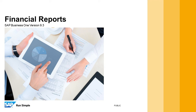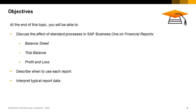Welcome to the Financial Reports topic. We will explore the effect of standard processes in SAP Business One on financial reports, such as the balance sheet, the trial balance, and the profit and loss report. We describe when to use each report and how to interpret typical report data.